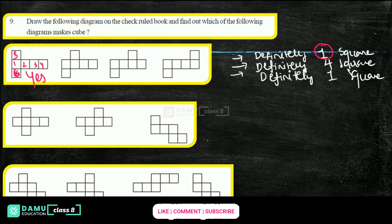Next one: middle stage has one, two, three, four squares — step two has four. Step one and step three each have one square. Top one and down one — yes, it is also possible.